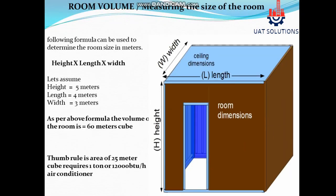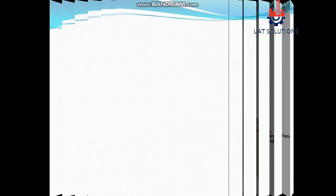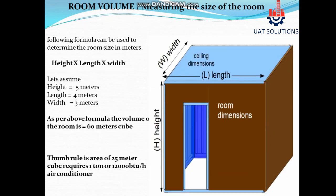Room volume — measuring the size of the room. The following formula can be used to determine the room size in cubic meters: height × length × width. Assuming height is 5 meters, length is 4 meters, and width is 3 meters, the volume equals 60 cubic meters. The thumb rule is that 25 cubic meters requires 1 ton or 12,000 BTU/h air conditioner.